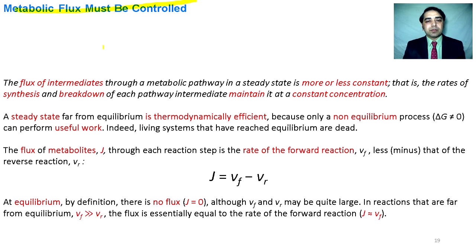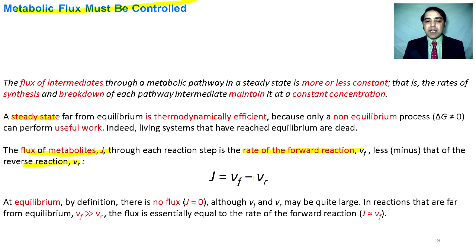Metabolic flux must be controlled. Metabolic flux is controlled by enzymes. For example, a pathway keeps going in a steady state, continuously providing metabolites. The flux of a metabolite J can be calculated by the rate of the forward reaction Vf minus the rate of the reverse reaction Vr: J = Vf − Vr. At equilibrium there is no flux and J equals zero. If the forward reaction is very fast compared to the reverse reaction, then J becomes approximately equal to Vf.